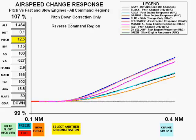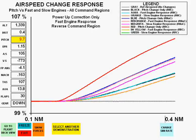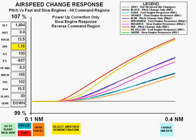Next, we are in the reverse command region. The first plot is a pitch-down correction only, followed by a power-up with a fast-responding engine, and last, a power-up correction with a slow-responding engine in the region of reverse command.